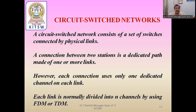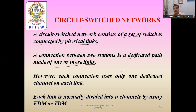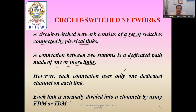The first is the circuit switching network. A circuit switching network consists of a set of switches connected by physical links — wires used to connect them. A connection between two stations is a dedicated path made of one or more links. Each connection uses only one dedicated channel on each link. Each link is normally divided into N channels by using FDM (Frequency Division Multiplexing) and TDM (Time Division Multiplexing), and signals are transmitted according to these methods.